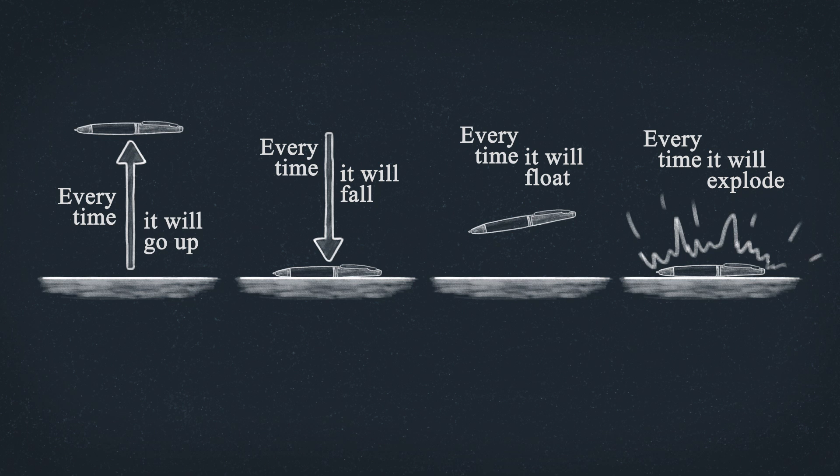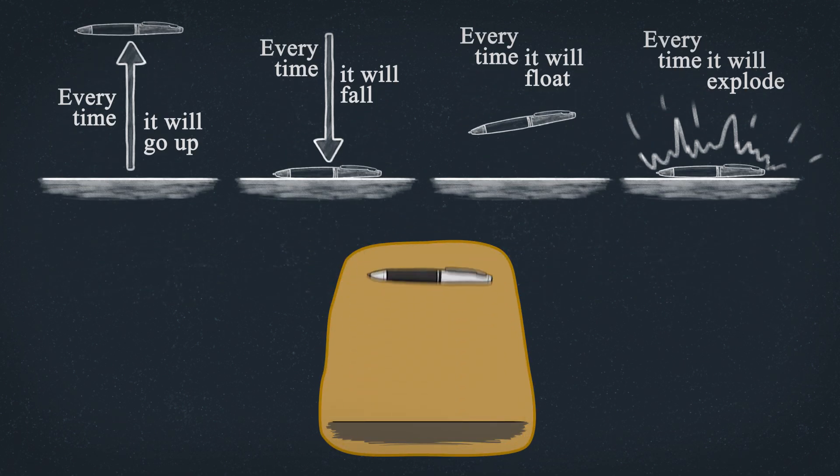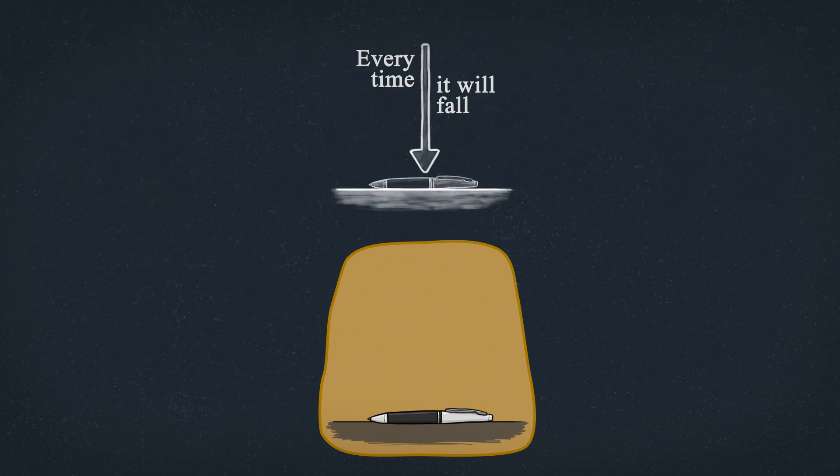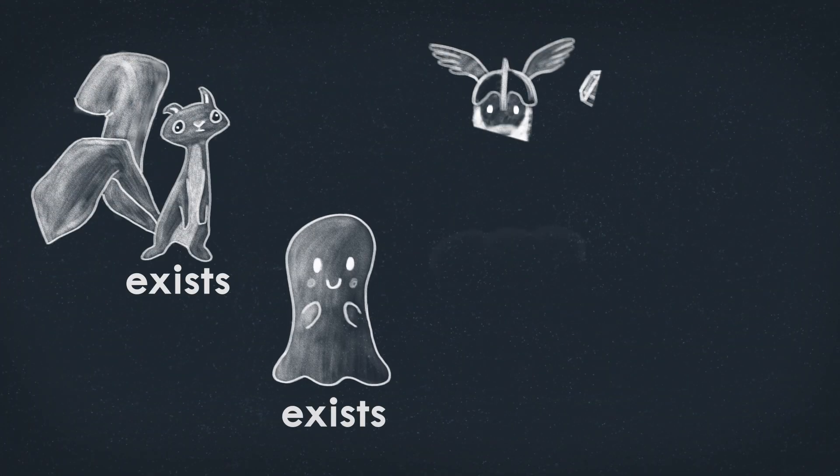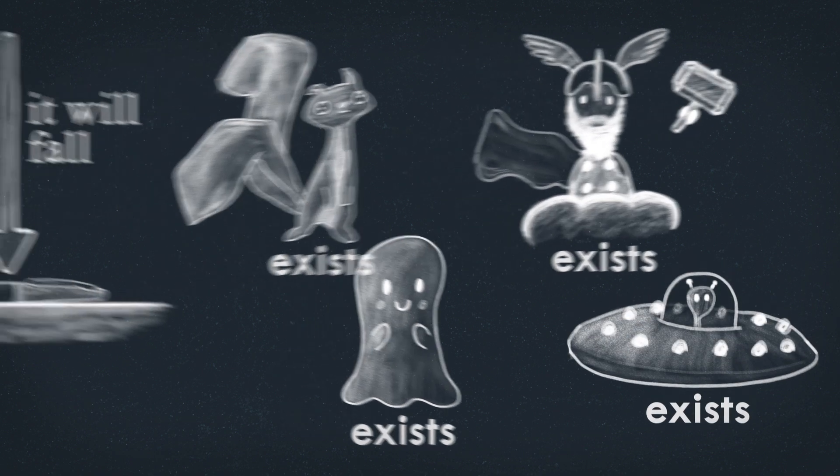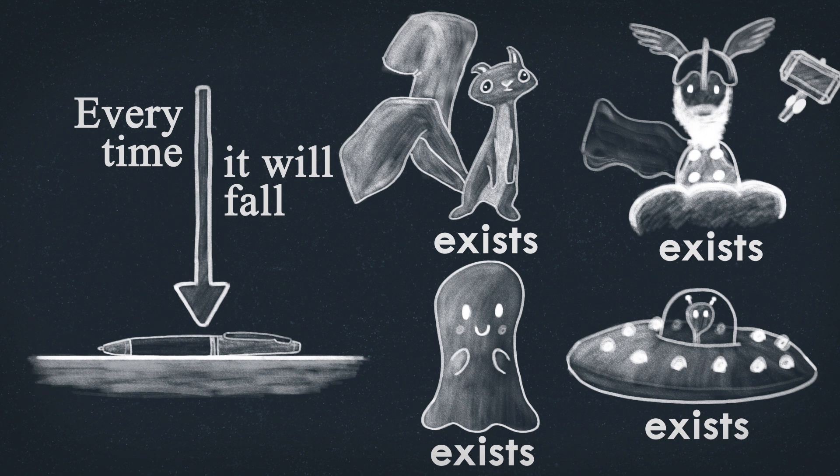Even if an idea is unverifiable, if it's falsifiable, you can at least eliminate stuff as you make observations. And the hypotheses that are left, are maybe left because they're true, maybe. With unfalsifiable ideas, we can't eliminate stuff. And the ideas can stick around with little to no observational basis.